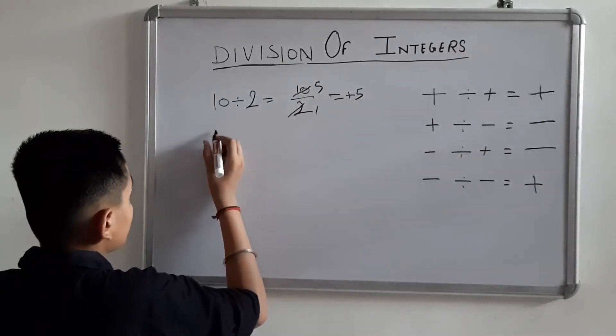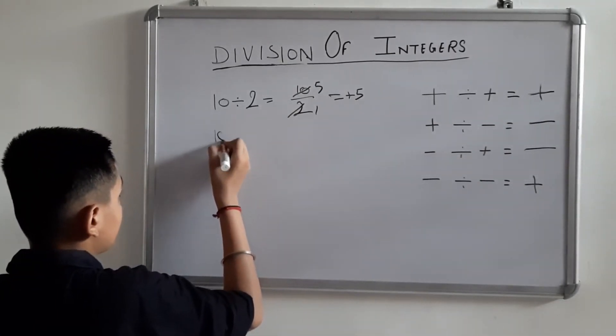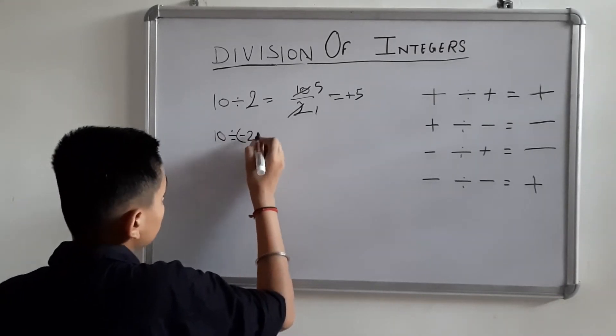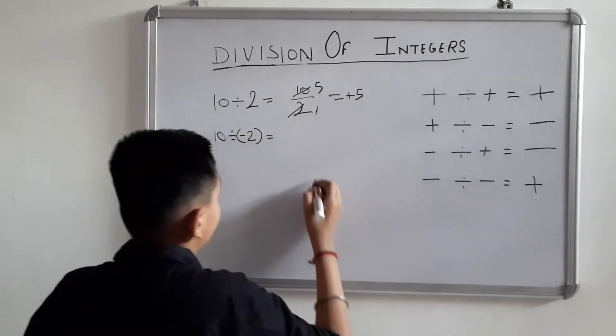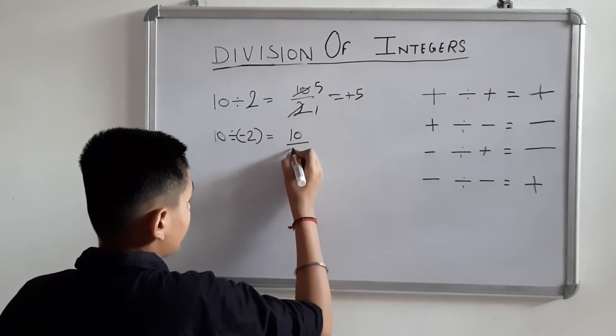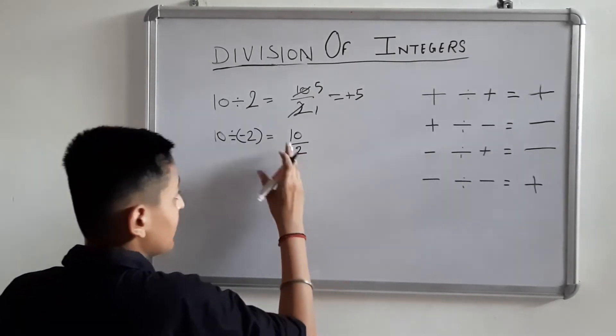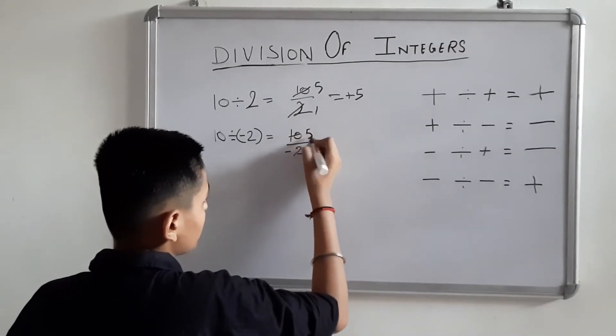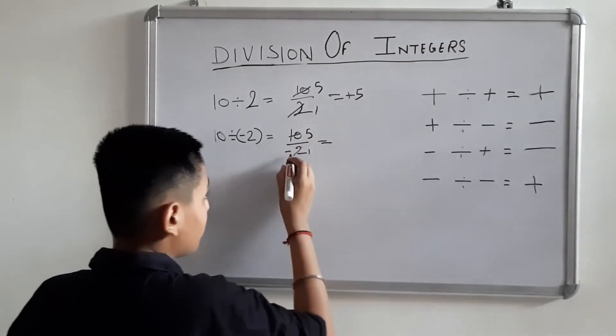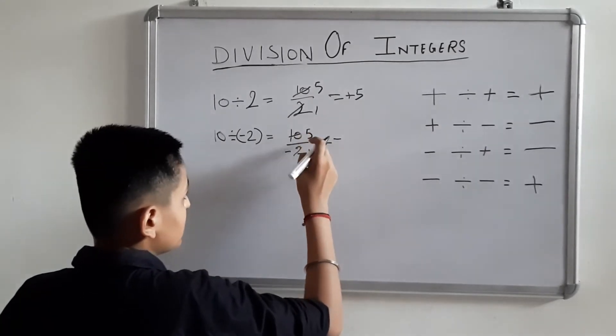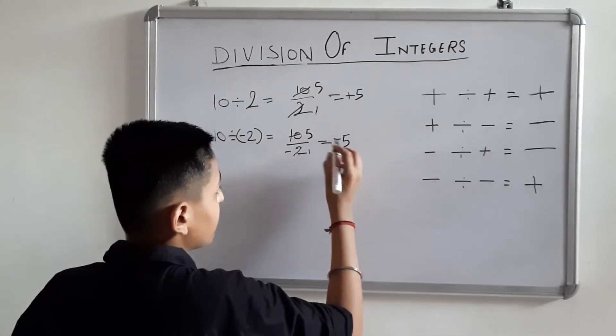Next take another example. 10 divided by minus 2 equals... 10 divided by 2, ignore the minus sign. First divide it. Now put the minus sign. Our answer is minus 5.